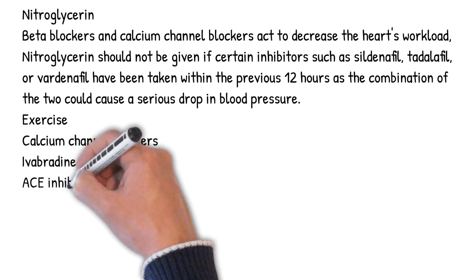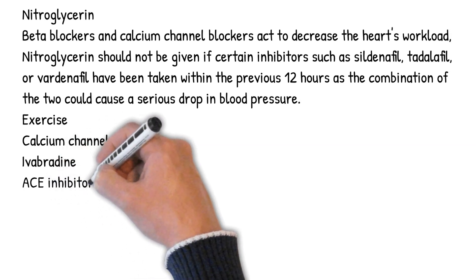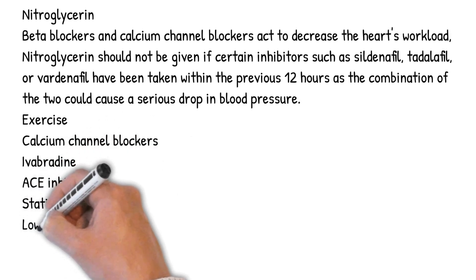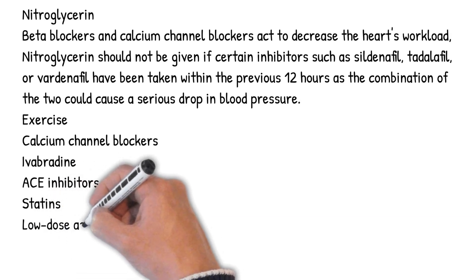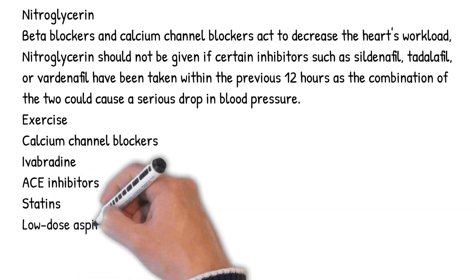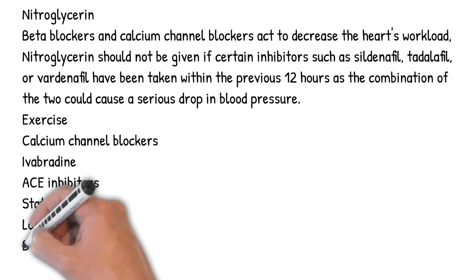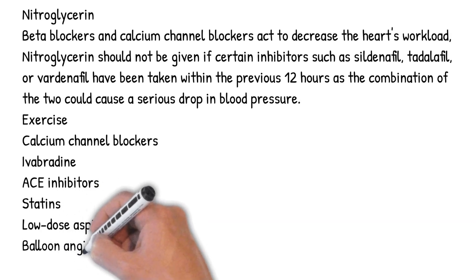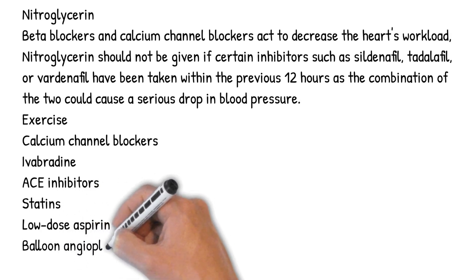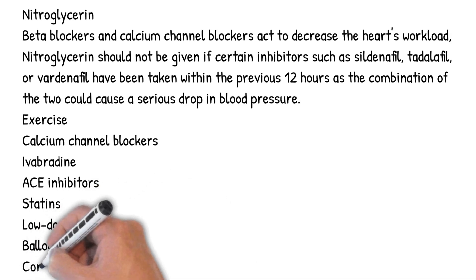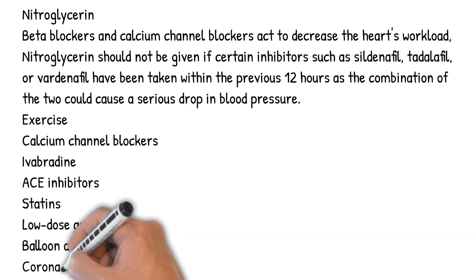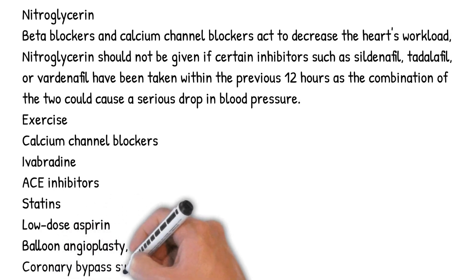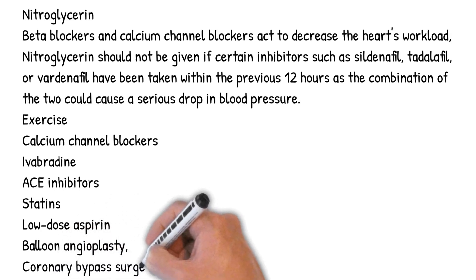Procedural treatments for angina include balloon angioplasty, in which a balloon is inserted at the end of a catheter and inflated to widen the arterial lumen, with stents often used at the same time to maintain the arterial widening. Coronary bypass surgery involves bypassing constricted arteries with venous grafts, which is much more invasive than angioplasty.